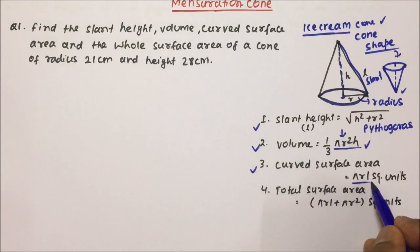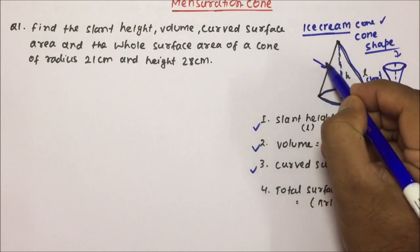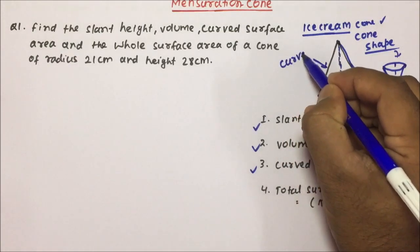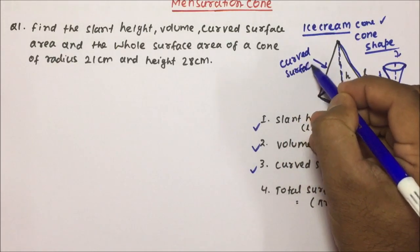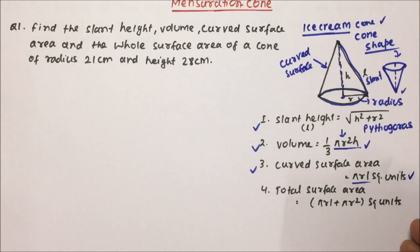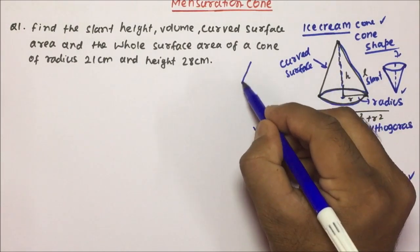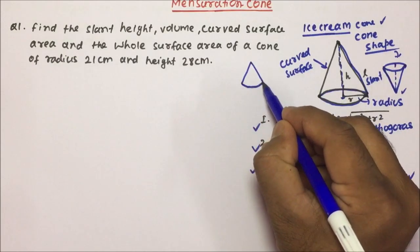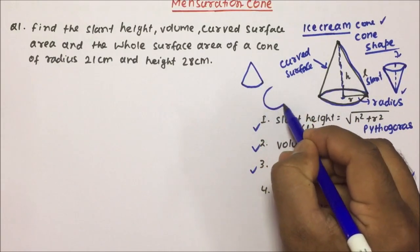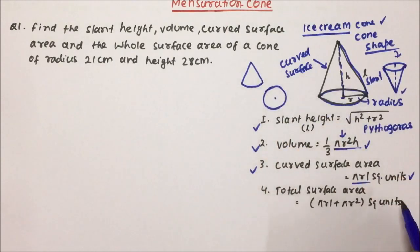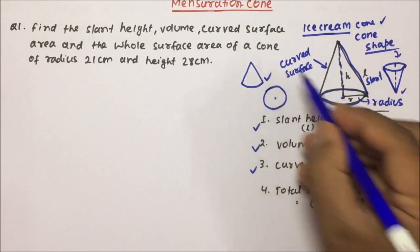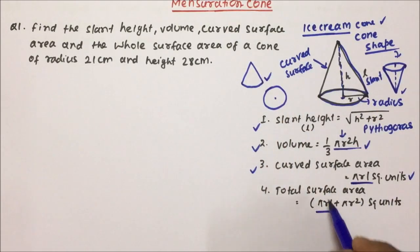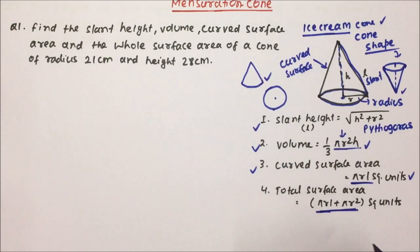Curved surface area will be equal to πrl, in square units. Total surface area means we have the curved surface — one sector — plus the circular base. So total surface area equals πrl plus πr², which is the formula we will be using for a cone.